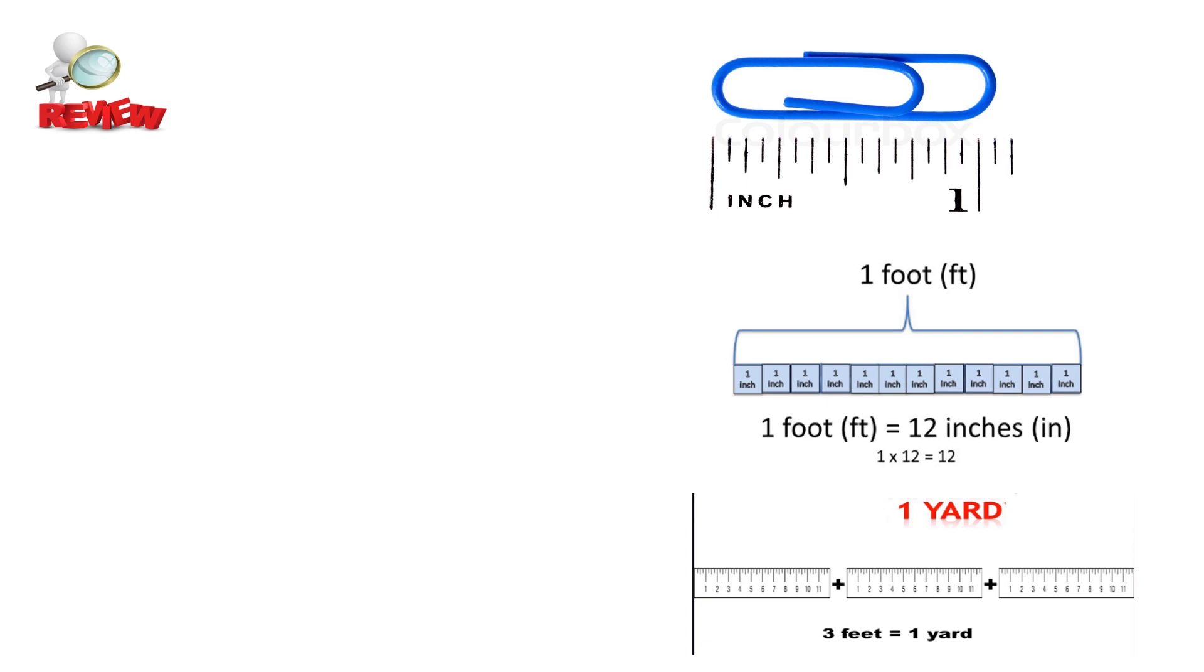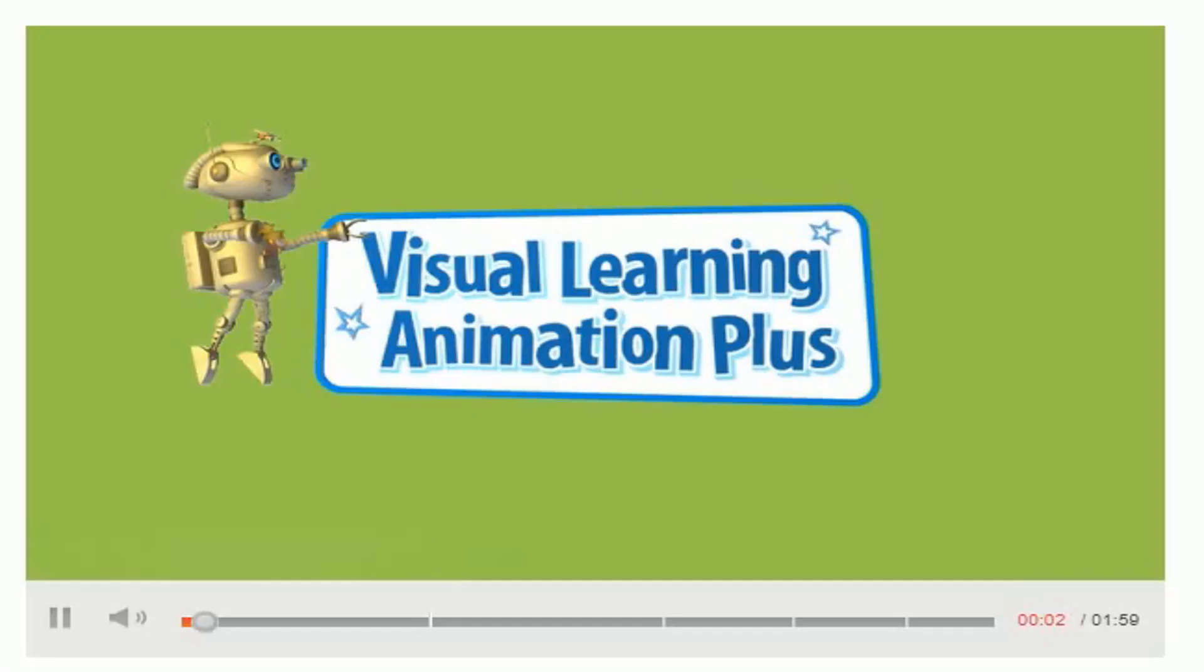The first and the short unit of length was inch. It is inch and one inch on the ruler looks like this. And this paper clip is about one inch long. And then the next one was feet or foot. Very good. And one foot is equal to how many inches? 12 inches. Very nice. And the third one was yard. And one yard was equal to? Very nice. Three feet.